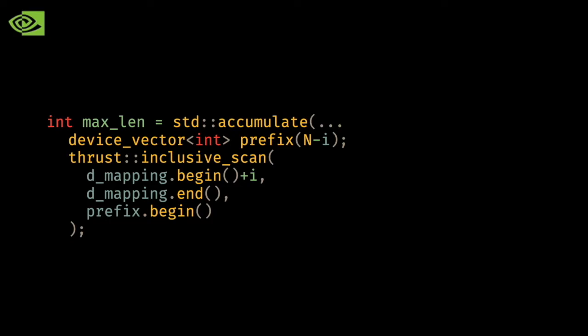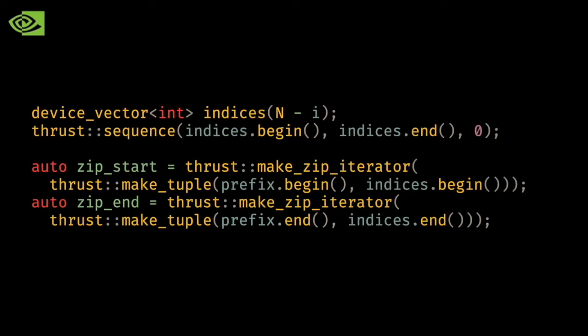Inside of our call to accumulate, I create a device vector for the given prefix and I take the prefix sum of that current prefix. I then create an iota to zip with our prefix summed string, or a range in BQN parlance, or a sequence in Thrust parlance. This corresponds to the couple dyad in BQN or the zip function in Python and lots of other functional languages.